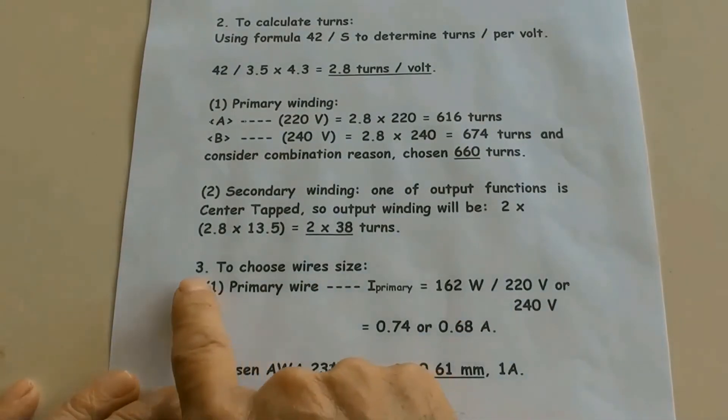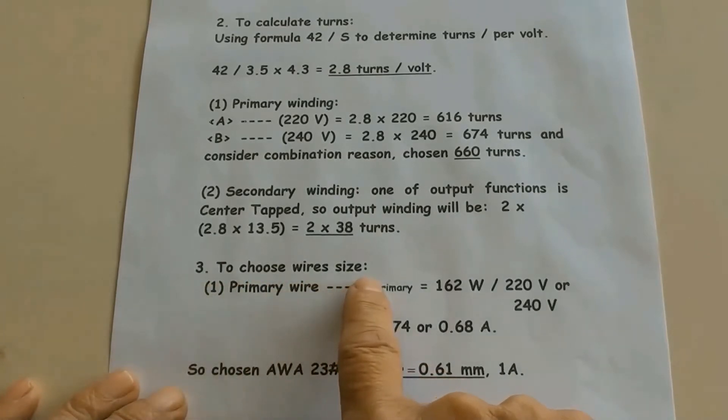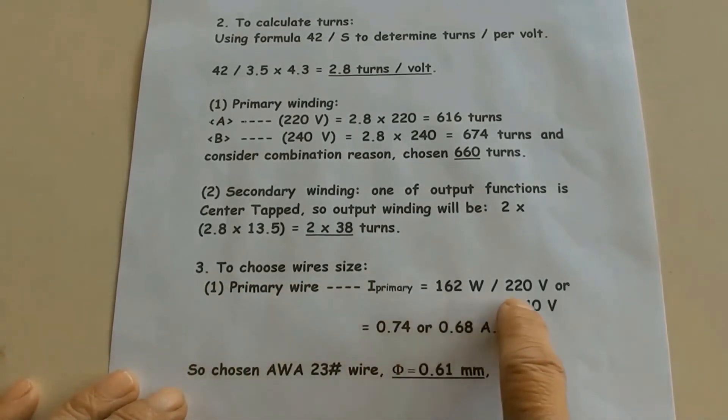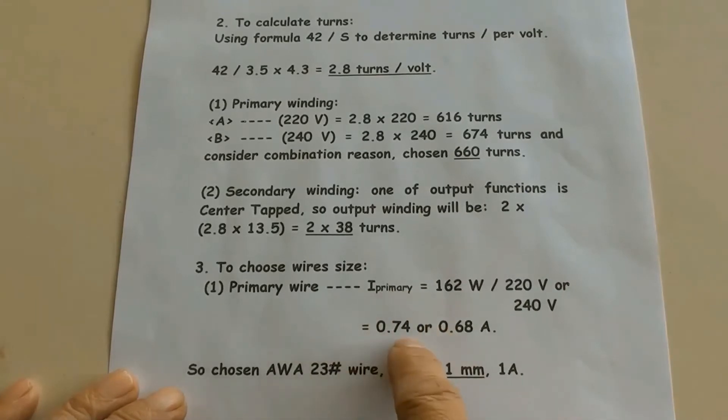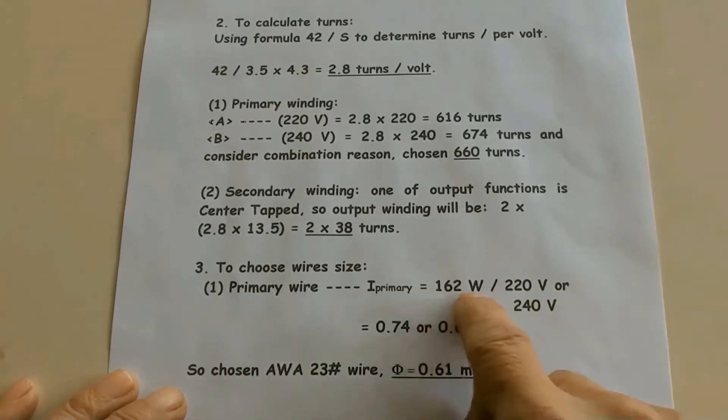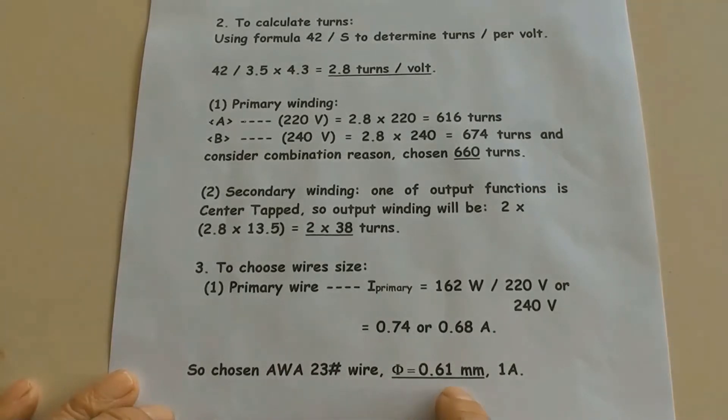To choose wire size. Primary wire: I primary equals 162 W over 220 volt or 240 volt equals 0.74 or 0.68 amperes. So chosen AWG23 wire diameter equals 0.61mm, 1A.